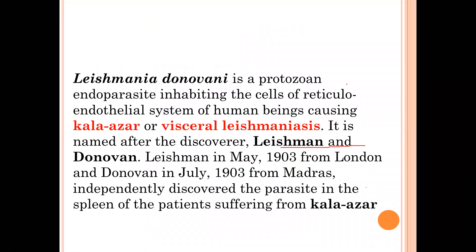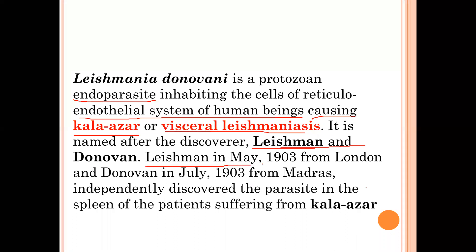Leishmania donovani is a protozoan endoparasite — endoparasite means it is found inside the body of the host — inhabiting the cells of the reticulo-endothelial system of human beings. It causes a disease known as Kala-azar or visceral leishmaniasis. It is named after two discoverers, Leishman and Donovani, who independently discovered the parasite in 1903 in the spleen of patients suffering from Kala-azar.